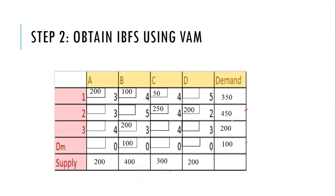The next step is to obtain the initial basic feasible solution. For this problem, we use Vogel's Approximation Method, which involves computing row penalties and column penalties to allocate resources to cells and obtain the initial solution.